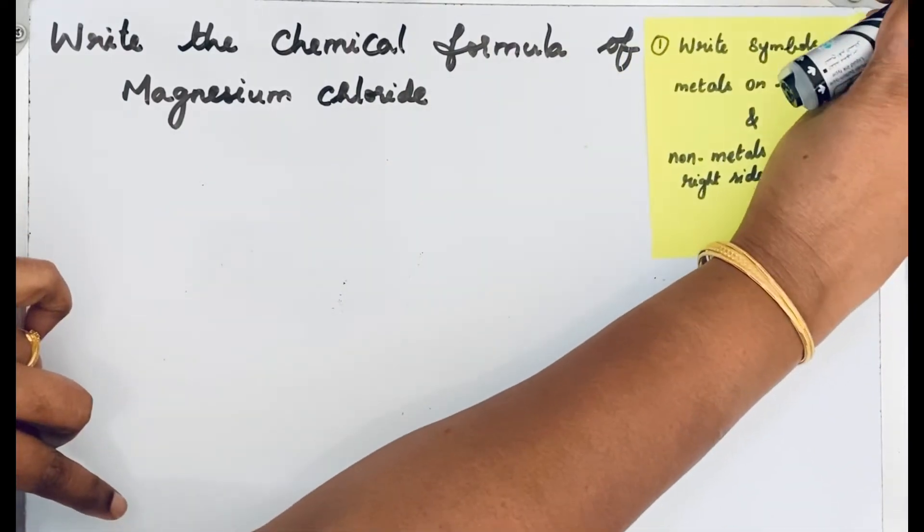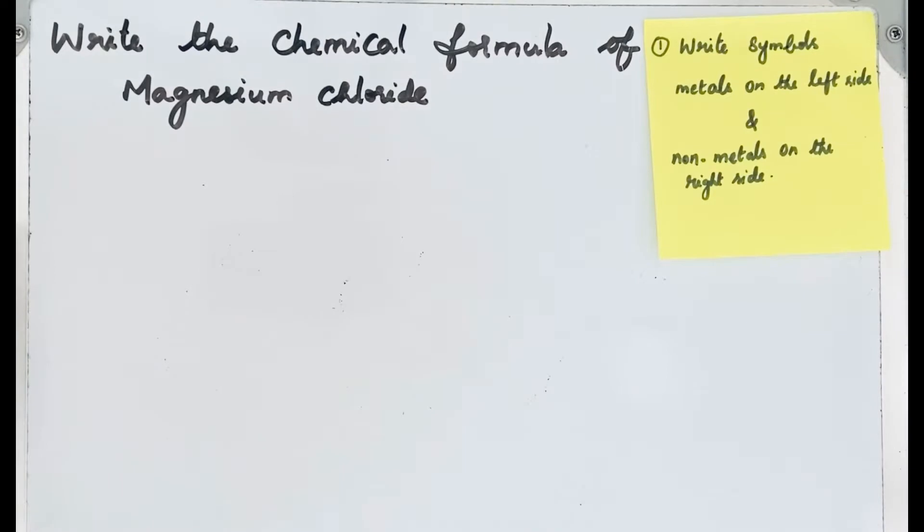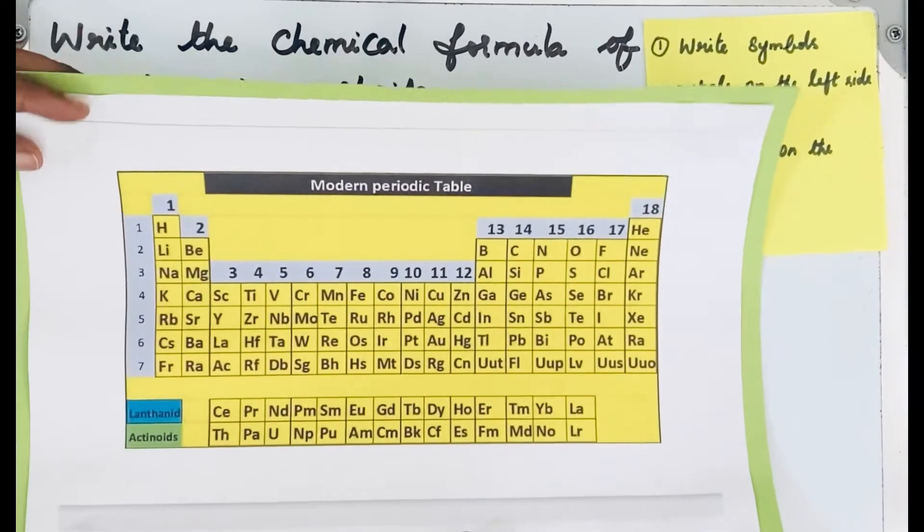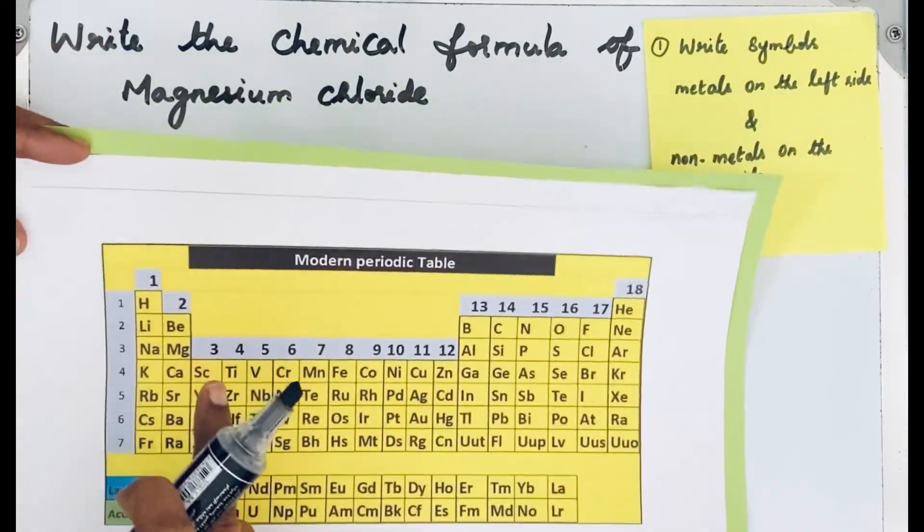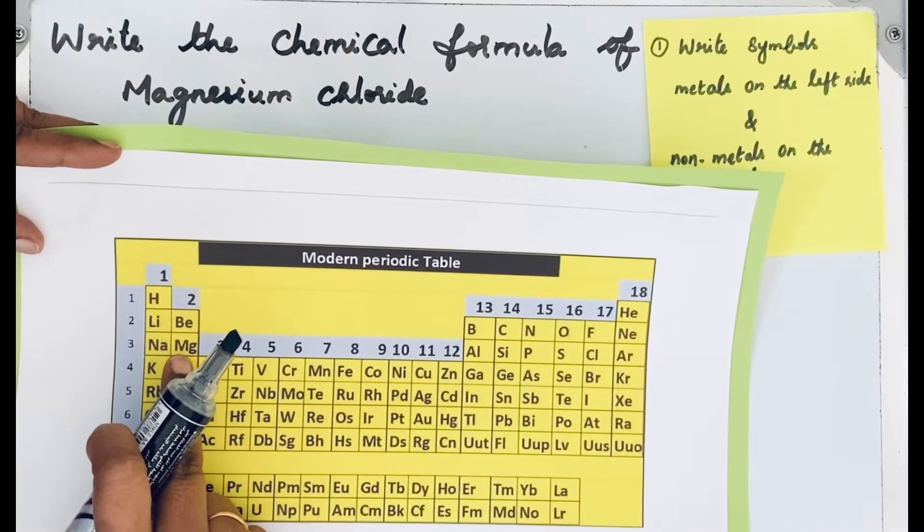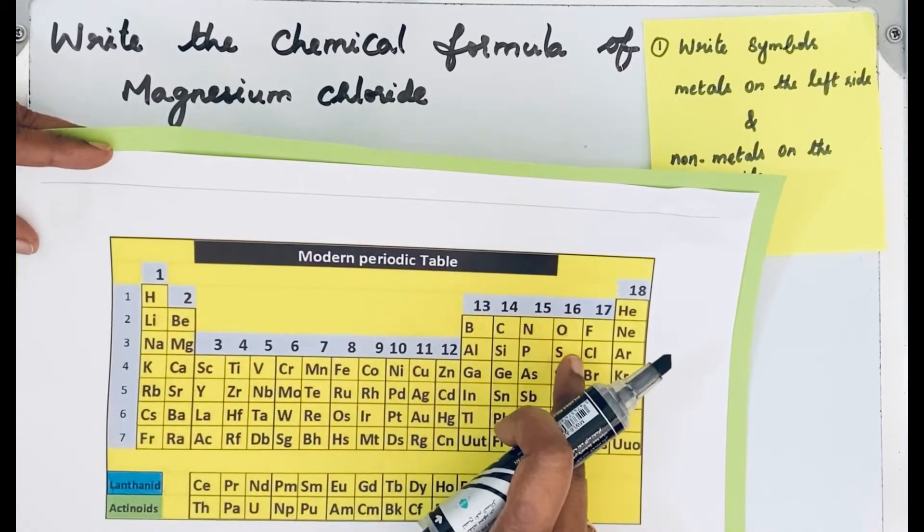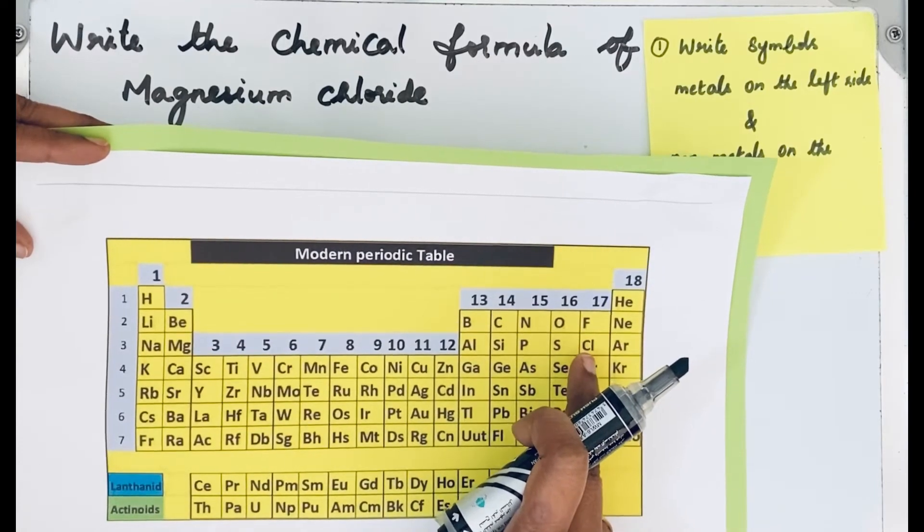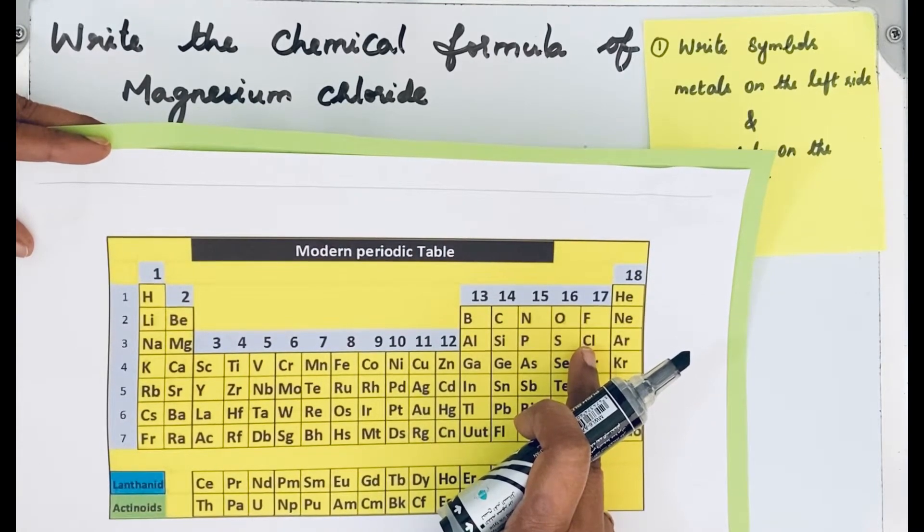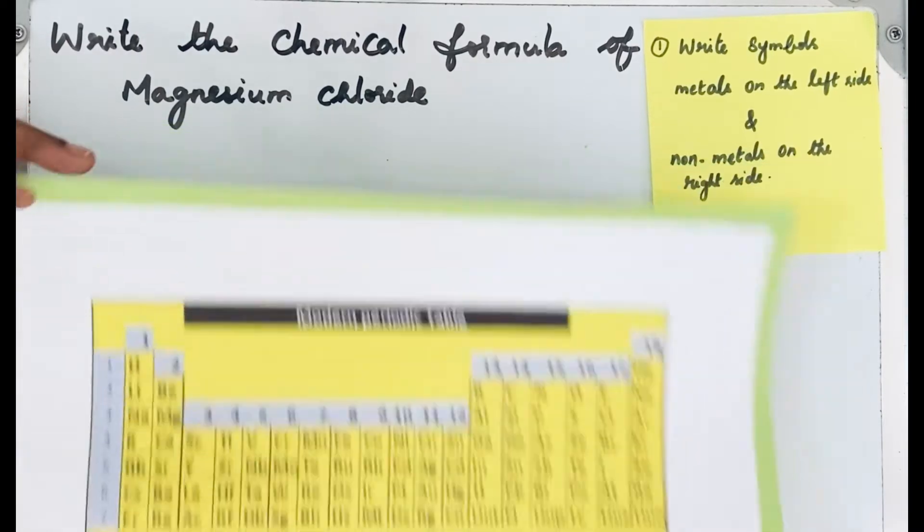How do we know the symbols of metals and non-metals? For that, see the periodic table. In the periodic table, the symbol of magnesium is Mg, and chloride ion, the elemental symbol is Cl.